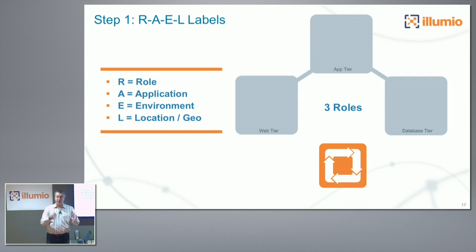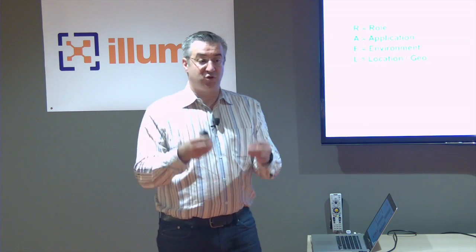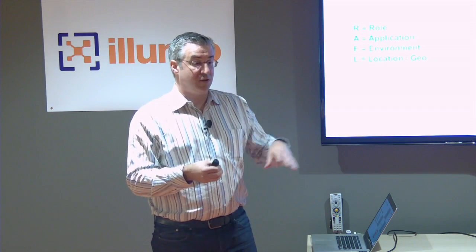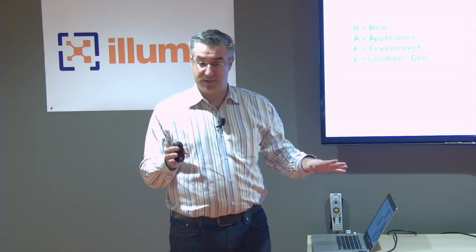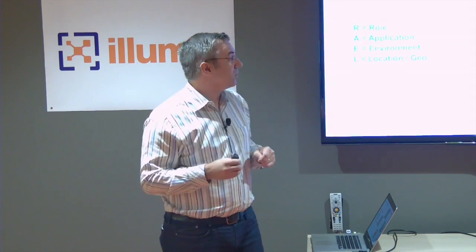We evolved the policy model to what we have now: a multidimensional model — specifically four dimensions. It's a four-dimensional policy model. You describe the policy in terms of labels and relationships. The labels are these four dimensions — our acronym is RAIL — describing how you tag a workload across those four dimensions.